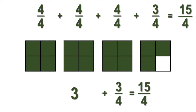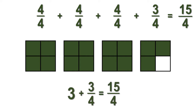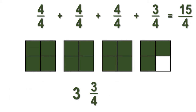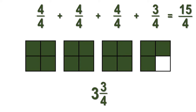When the wholes are added together, there are three wholes, and when the extra one fourth parts are added together, there are three fourths. The fraction fifteen fourths is equivalent to the mixed number three and three fourths. Three plus three fourths can be written as the mixed number three and three fourths. The word 'and' means add, so the plus sign is no longer needed. A mixed number is the sum of a whole number and a fraction less than one.